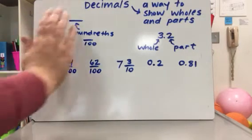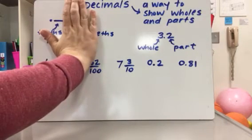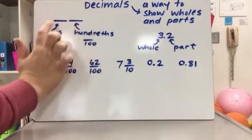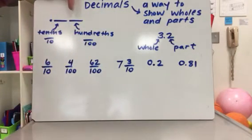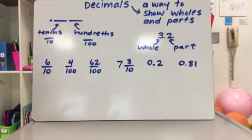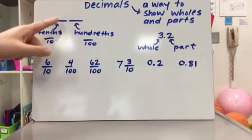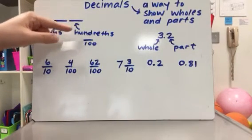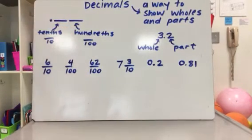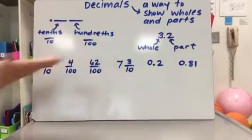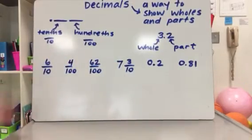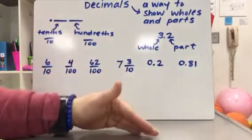If the digits stop right here, that means it was partitioned into 10 parts. If the digits stop right here, then it was partitioned into 100 parts. You could also see it as 10 parts and then a few extra little hundredths, and we'll talk about that also. What we're going to do now is practice changing fractions into decimals and then decimals into fractions.